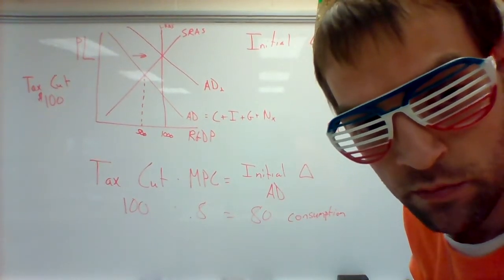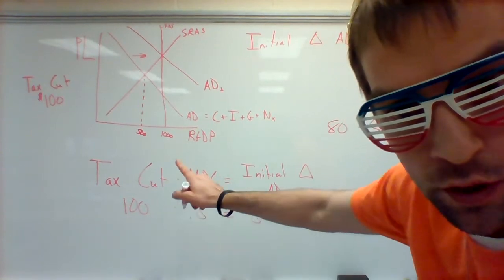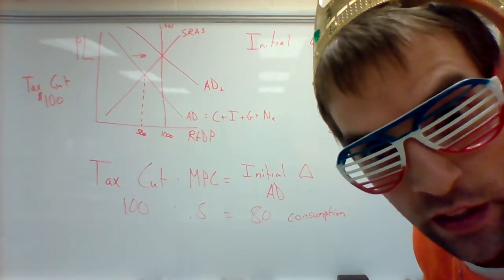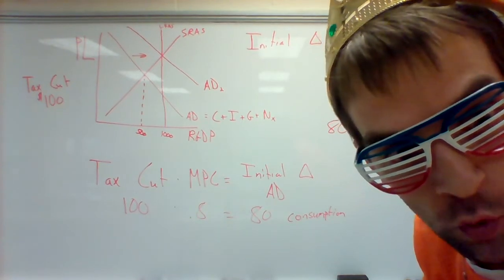It's not going to close this time. It's not going to make it all the way to its potential output at a thousand. It's only going to make it to 900. So really, this tax cut should look more like this.